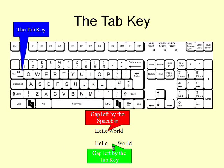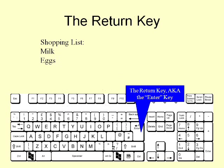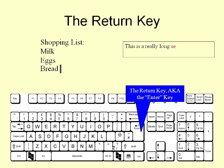If you want to make bigger spaces between words, you can use the tab key. This allows you to align blocks of text into tables. You can start a new line of text by pressing the return or enter key. You only really need to use this for new paragraphs, as when your typing reaches the end of a line, it will automatically continue on to the next.